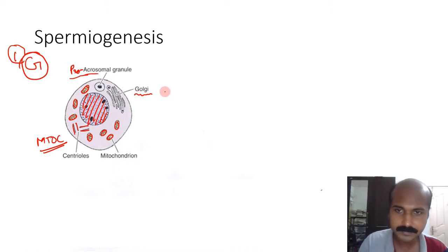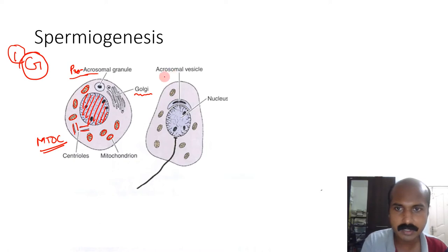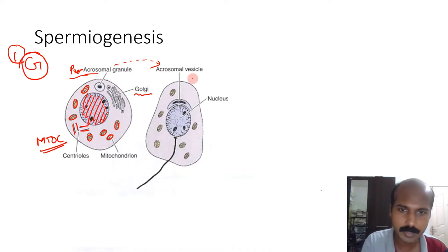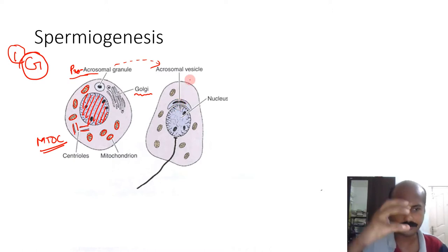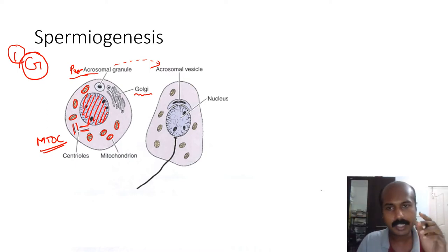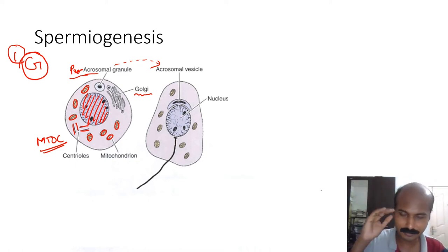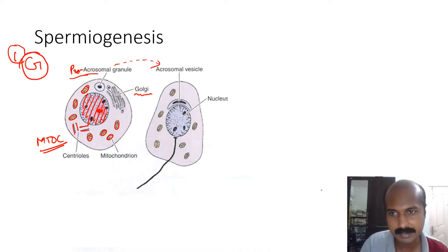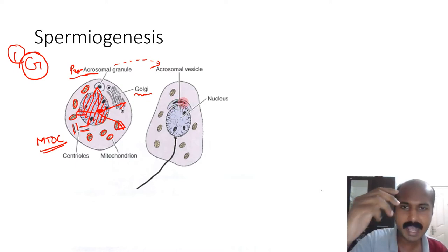In the second phase — the cap phase — the Golgi is completely converted into an acrosomal vesicle as the pro-acrosomal granules coalesce. The acrosomal vesicle adheres to one side of the nucleus, defining the anterior or frontal part of the spermatozoon. Before this, the cell was almost radially symmetric.